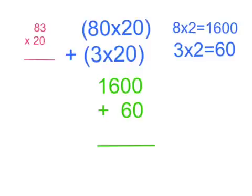Now since we've got our answers to 80 times 20 and 30 times... I meant 3 times 20 equals 60. We must add the two together.